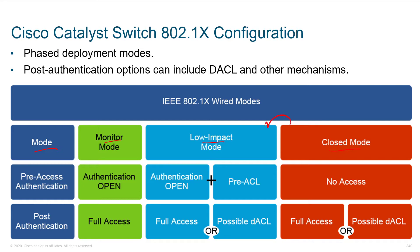If we take a step back from that, you have low impact mode, which basically leaves us with open authentication — you don't have to necessarily authenticate. Just when you attach to the network, we'll have a pre-authentication ACL. Once you authenticate, we'll bring up full access, giving you a broader range of capabilities, potentially pushing down a downloadable ACL.